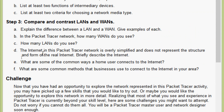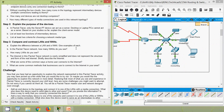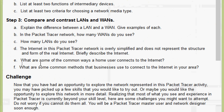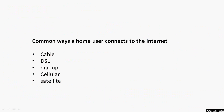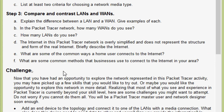Coming to part D: the internet in this Packet Tracer network is overly simplified and does not represent the structure and form of the real internet. Briefly, the internet is a network of networks, or a worldwide collection of interconnected networks. Part E: some common ways a home user connects to the internet include cable, DSL, dial-up, cellular, and satellite.